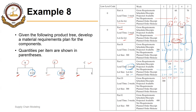We have a planned order receipt of 300. After meeting the requirement of 100, we will have a projected available of 200 at the end of period 1. After meeting the requirement of 140, we will have a projected available of 60 at the end of period 2. Net requirements are 140, so 200 minus 60 will be 140. We need a planned order receipt of 300 because the lot size is 300 and lead time is 2 weeks, so we will need to place an order at the beginning of week 1.